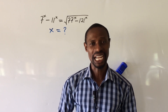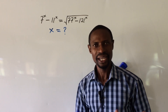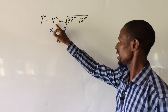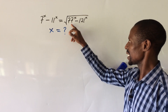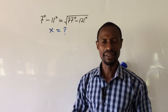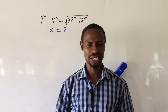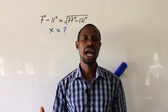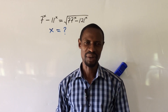Welcome everyone to my channel. Today we have a challenge: it is an only paired challenge. The question reads: 7 to the power of x minus 11 to the power of x equals the square root of 77 to the power of x minus 121 to the power of x. What would be the value of x? I'm going to use a special approach, different from the one you know.